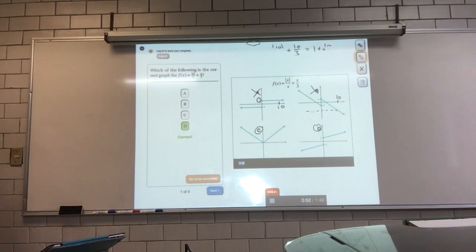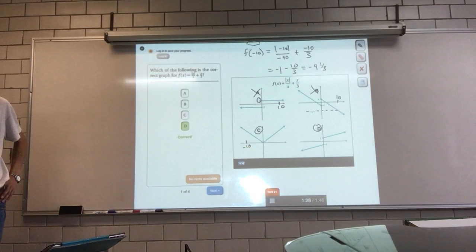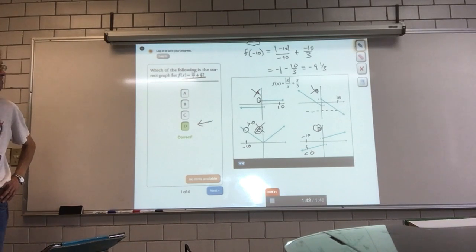Next, let's try to plug in a negative value, because the last two graphs have different behaviors when x is negative. So what's f of negative 10? Well, it's the absolute value of negative 10 over negative 10, plus negative 10 over 3. The first term is 10 over negative 10, which is negative 1. And the second term is minus 10 over 3. So this comes out to be negative 4 and 1 third. c has a positive value when you plug in negative 10, c is positive. And d, when you plug in negative 10, gives you something negative. So c is no good.